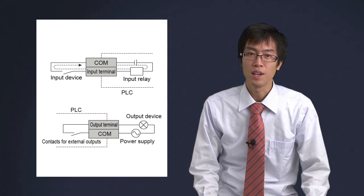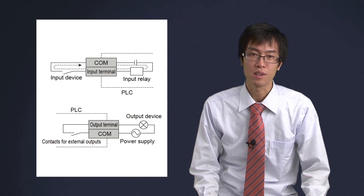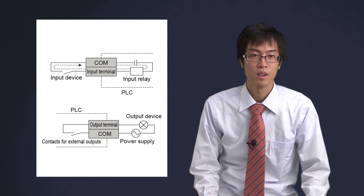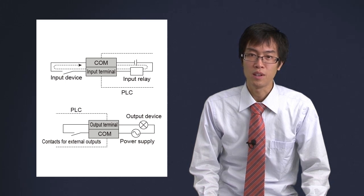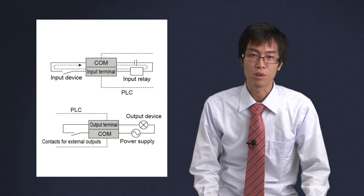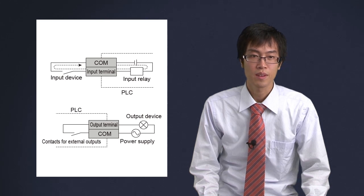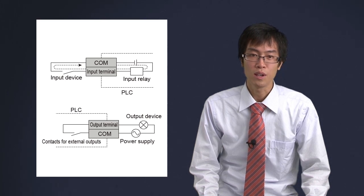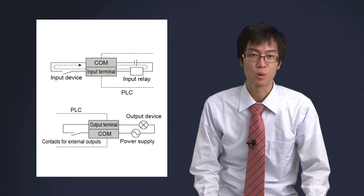Similarly, an output device works when it is connected between a terminal and its COM terminal. Note that you need to prepare an external power supply used to drive the output device. In this way, DC or AC devices can be controlled according to COM terminal.